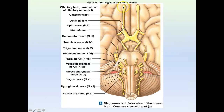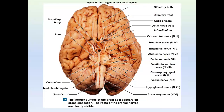This is the diagram already numbered for you. Roman numeral 1 is the first, then 2, 3, 4, 5, 6, 7, 8, 9, 10. Number 11 is very interesting — it actually arises from the spinal cord — and here is 12. This is actually a human brain with the cranial nerves still attached, so it's interesting to see what they look like in real life.